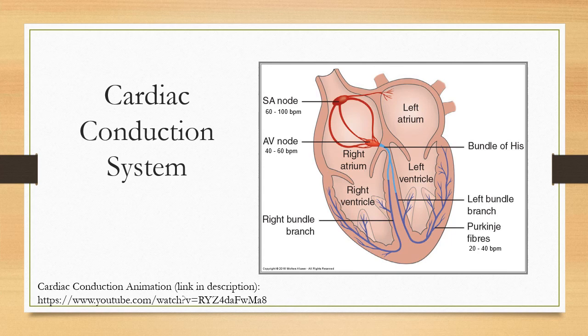Cardiac cells are unique in that they have automaticity — the ability to spontaneously generate an electrical impulse via pacemaker cells. They are excitable, meaning they respond to electrical stimuli; conductive, meaning they pass electrical impulses to the next cardiac cell; and contractile, meaning they contract upon receiving an impulse. There is a YouTube clip referenced on the slide demonstrating the cardiac conduction system in action, and the link will be posted in the video description.